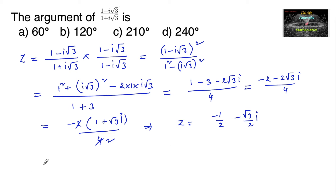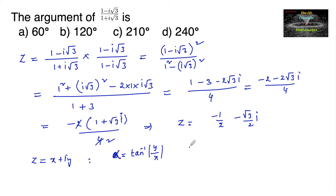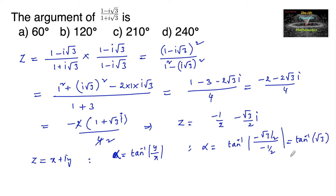Let us first find the acute angle. For z = x + iy, the acute angle alpha = tan⁻¹(|y / x|). Here alpha = tan⁻¹(|(-√3/2) / (-1/2)|) = tan⁻¹(√3). So alpha = π/3, which is 60 degrees.